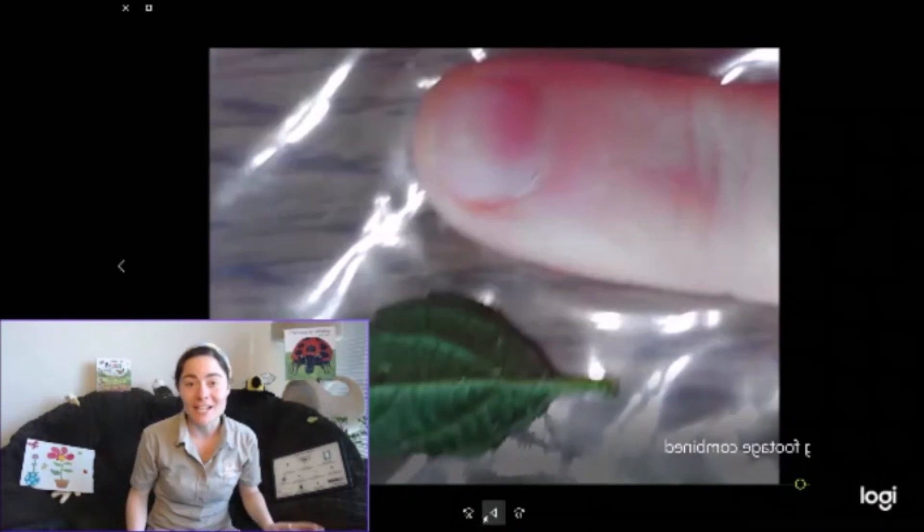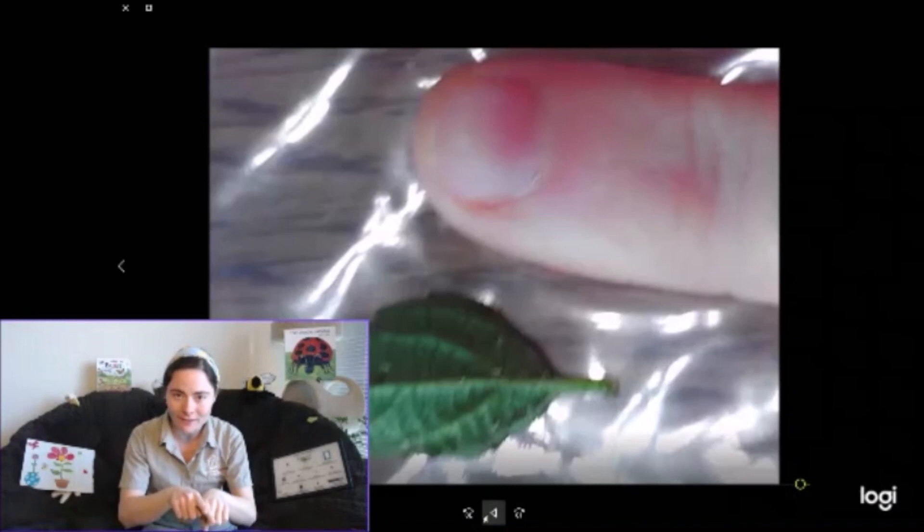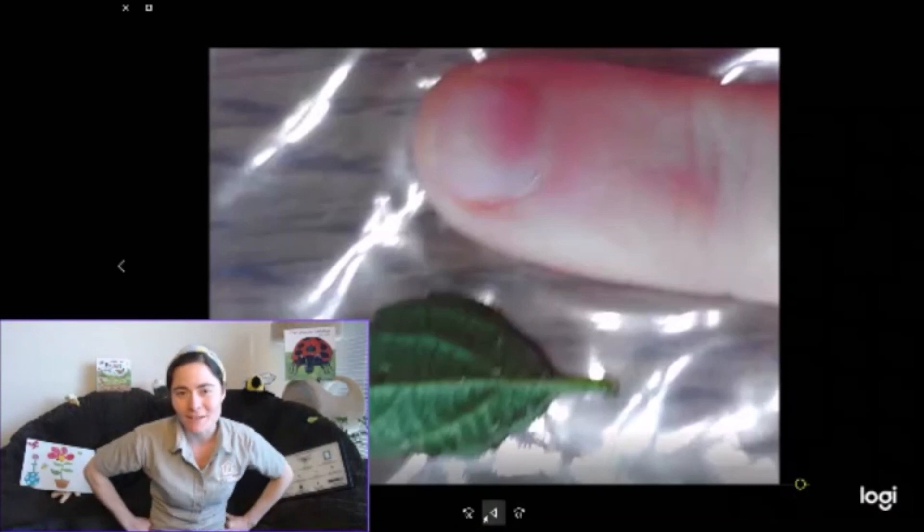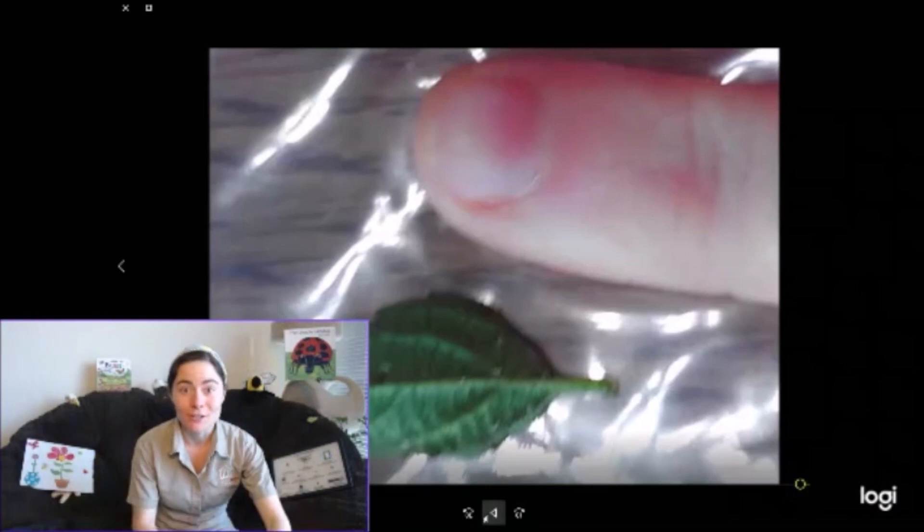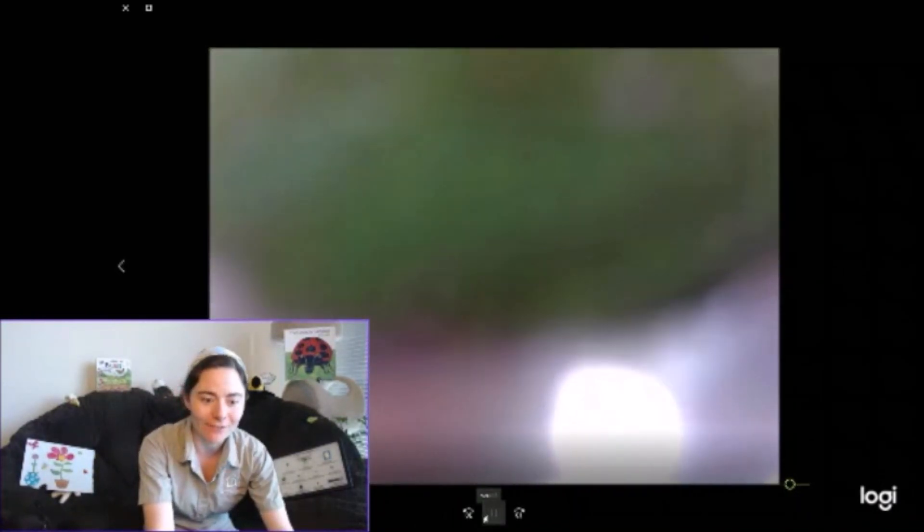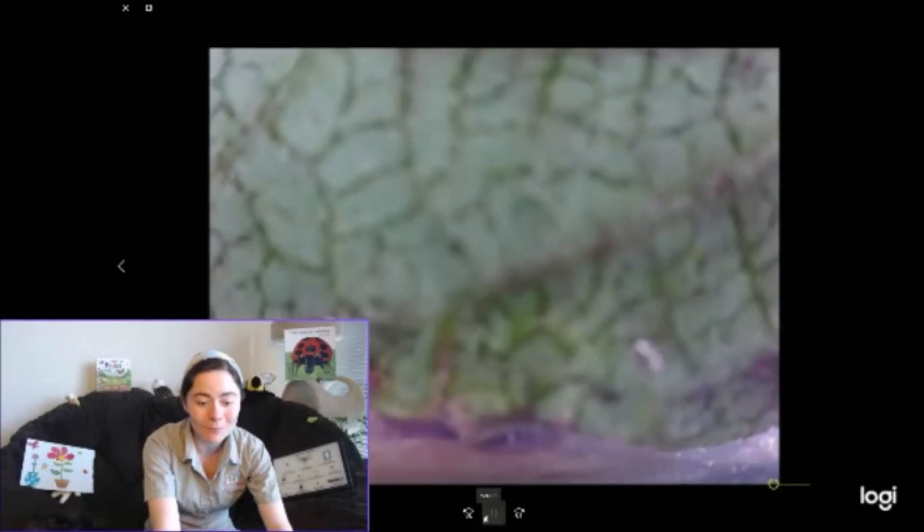Okay. Now what we're looking at is my finger next to a very small leaf, as you can tell. And on that leaf, there are some bugs, some very specific bugs that ladybugs like to snack on. So let's go ahead and zoom in and see if we can see any of those bugs. Look closely, zooming in more.